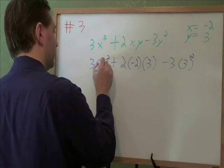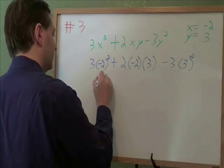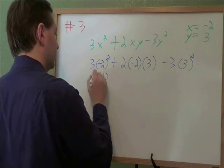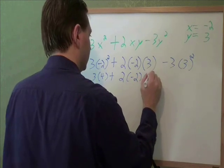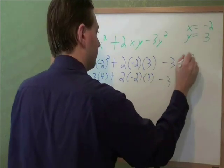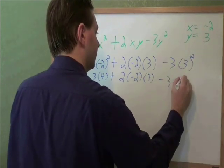What's negative 2 squared? Negative 2 times negative 2 is positive 4. 3 squared, 3 times 3 is 9.